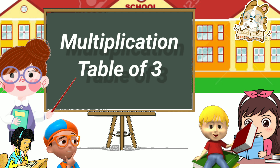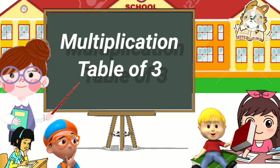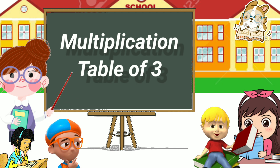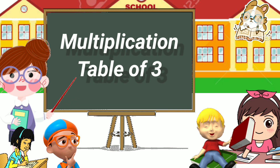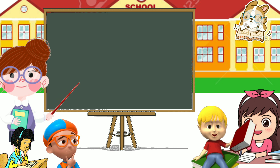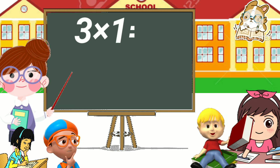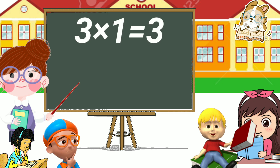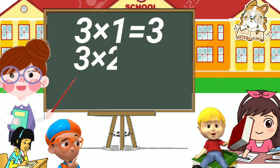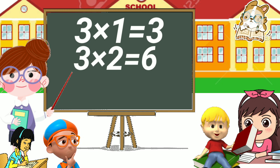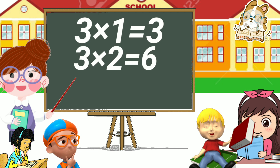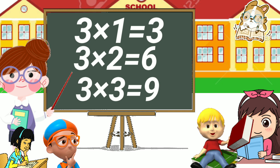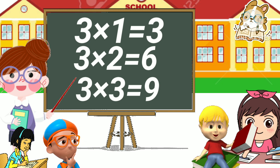Let's learn the multiplication table of three. Three one has three, three two has six, three three has nine.